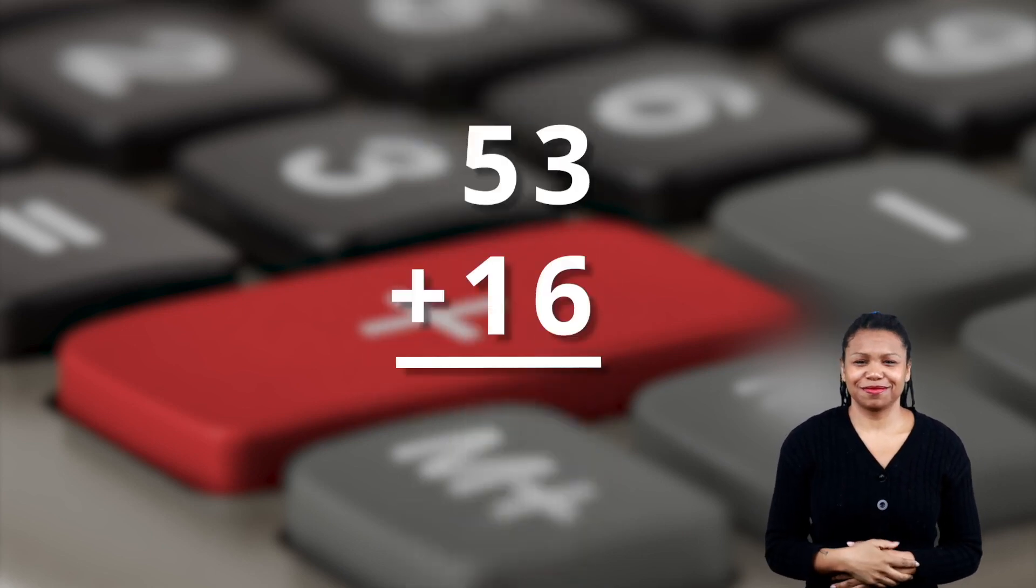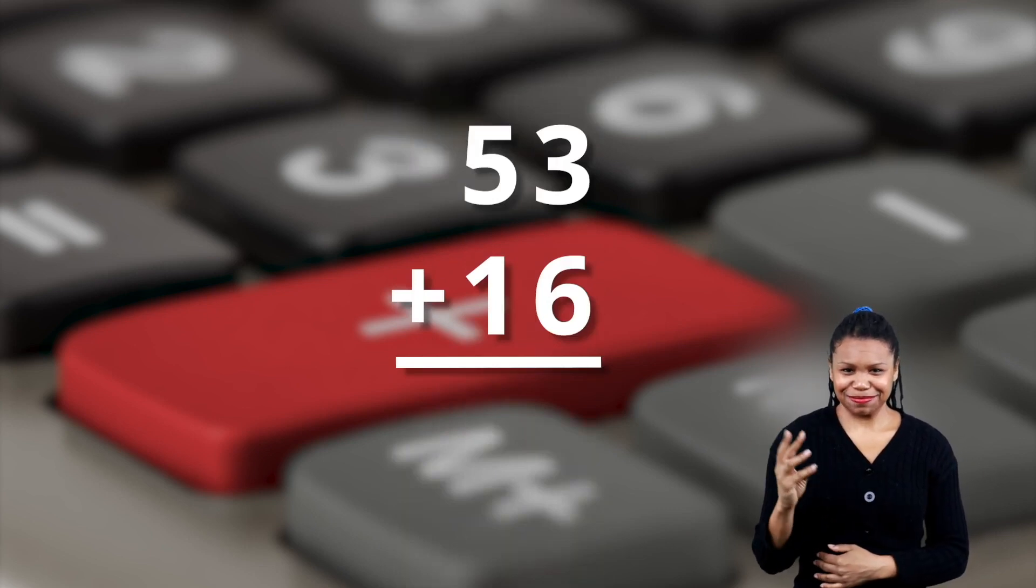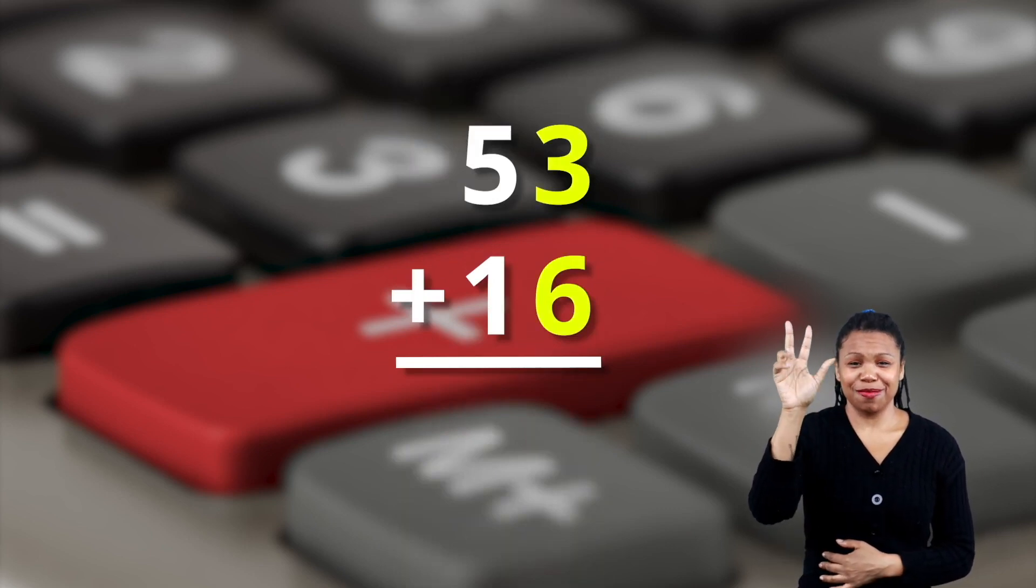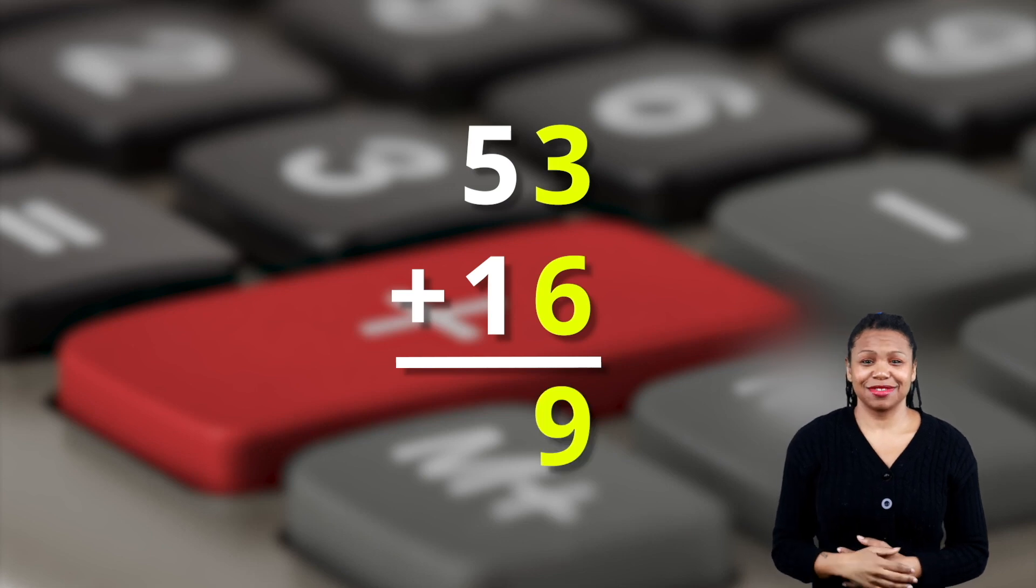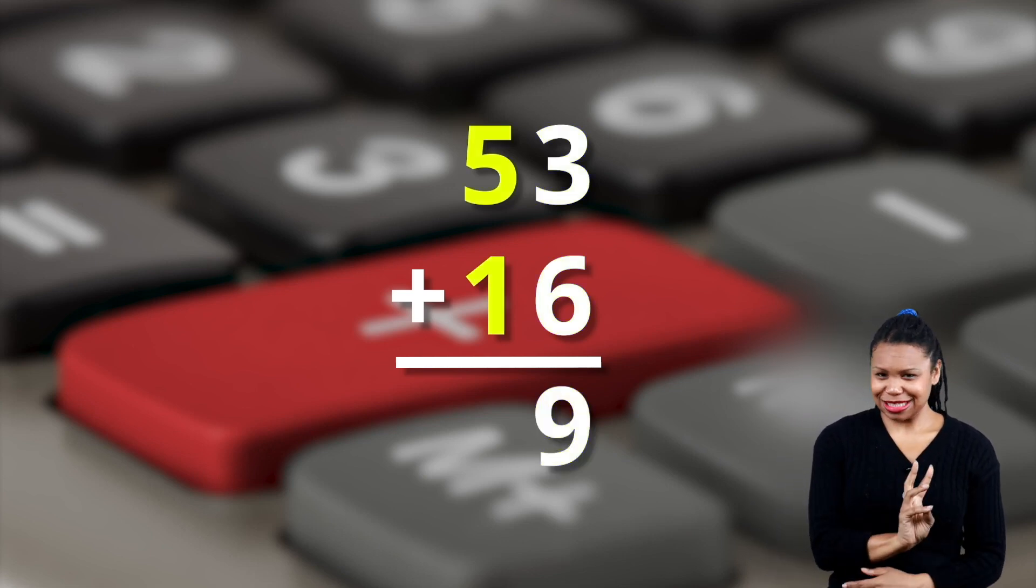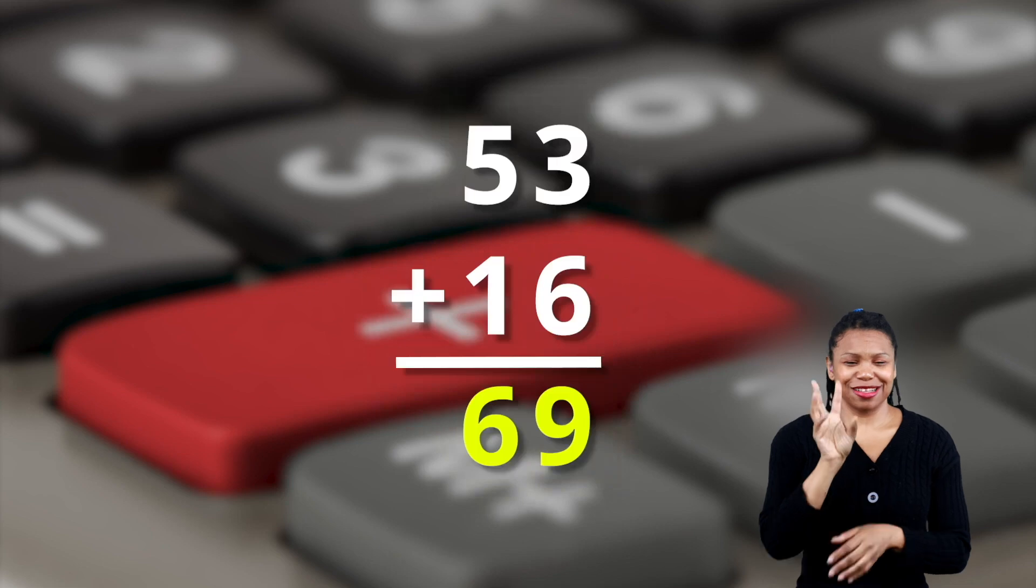Here's the next one. Fifty-three plus sixteen. Three plus six equals nine. Five plus one is six. Sixty-nine.